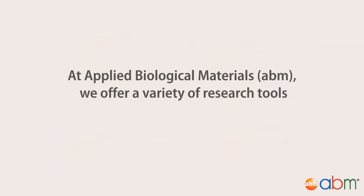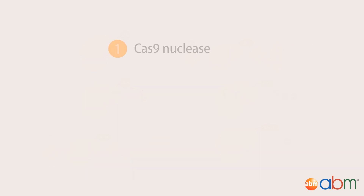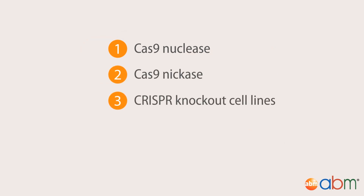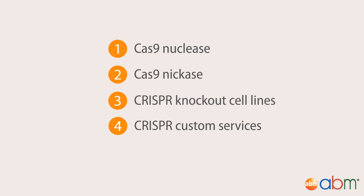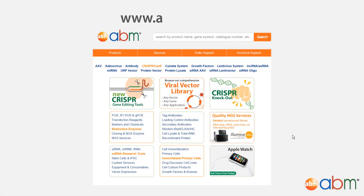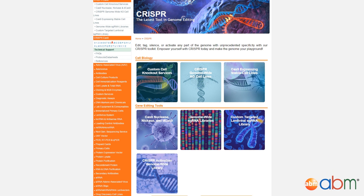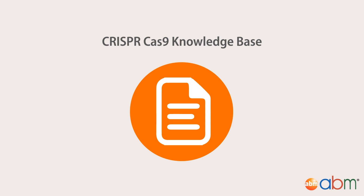To help you conduct your genomic and epigenomic research faster, smarter, and more affordably, our ABM team offers the Cas9 nuclease, nickase, and an entire library of CRISPR knockout cell lines and custom services. We will also offer an exciting new suite of dCas9 systems you can add to your toolbox. Visit our online store at www.abmgood.com and click on CRISPR gene editing tools. If you enjoyed this video, don't forget to comment and subscribe. For more information, please visit our CRISPR-Cas9 knowledge base.